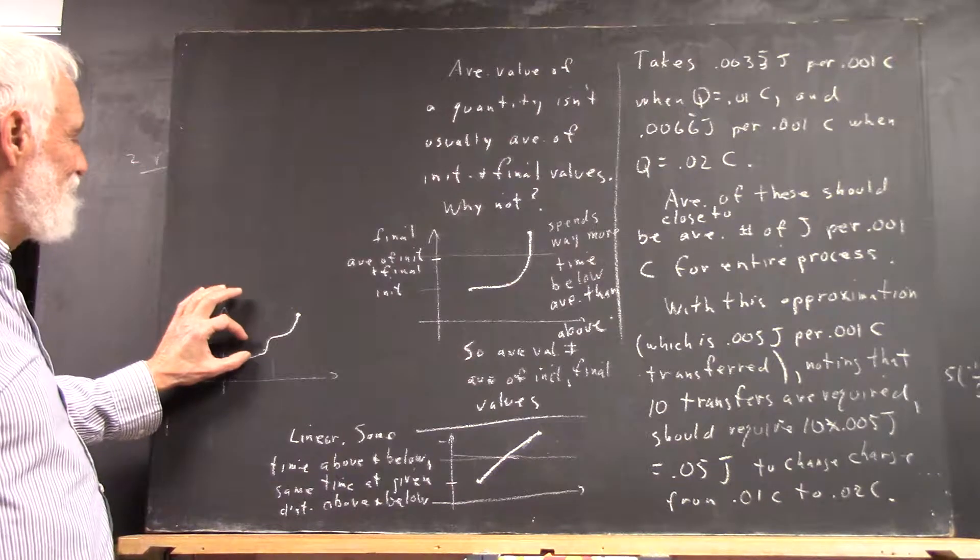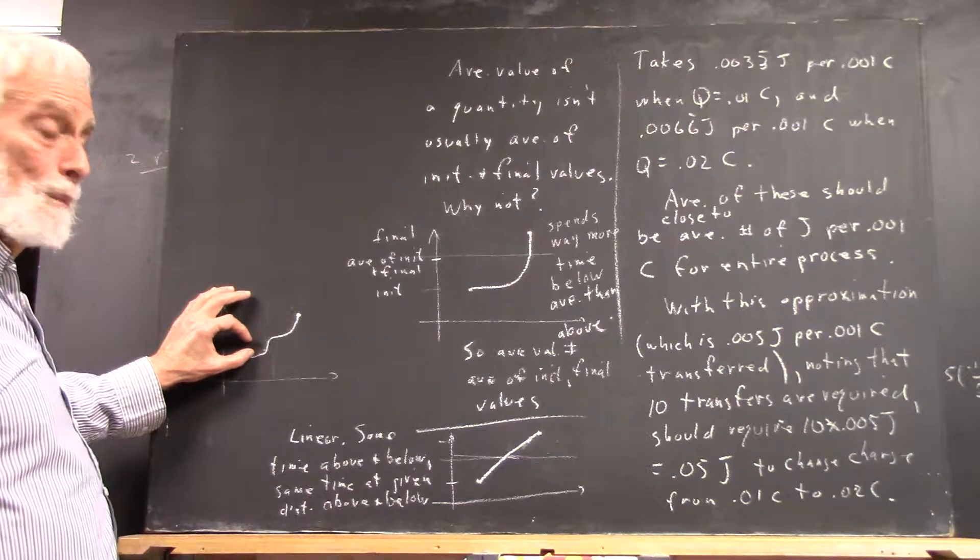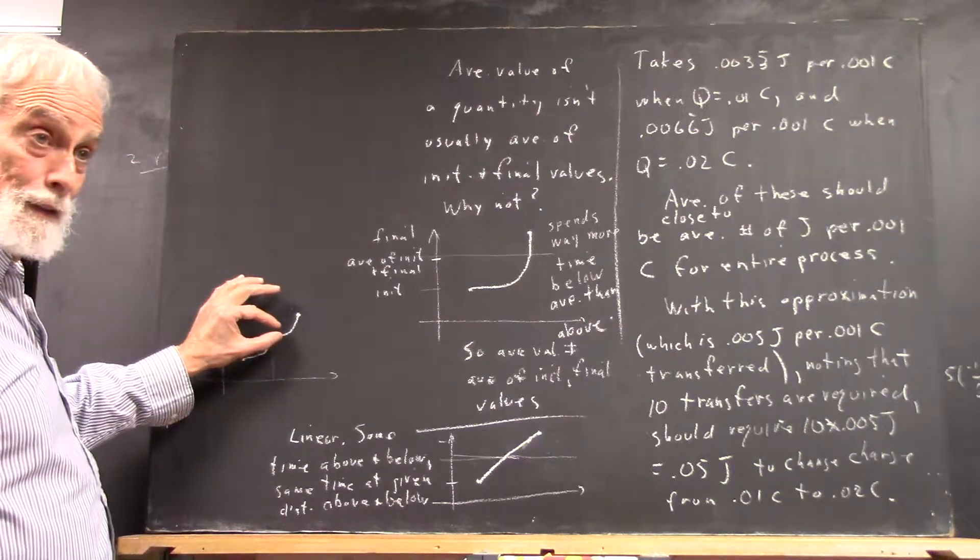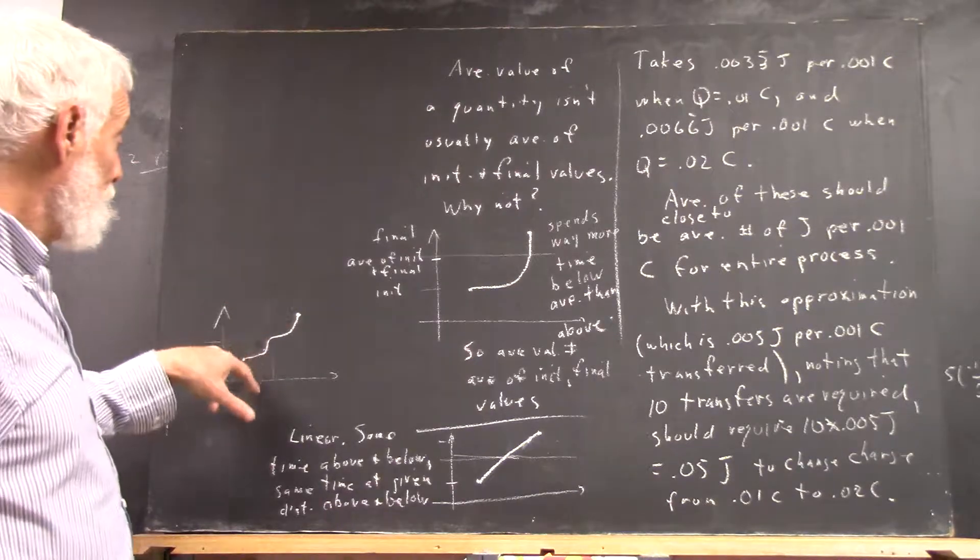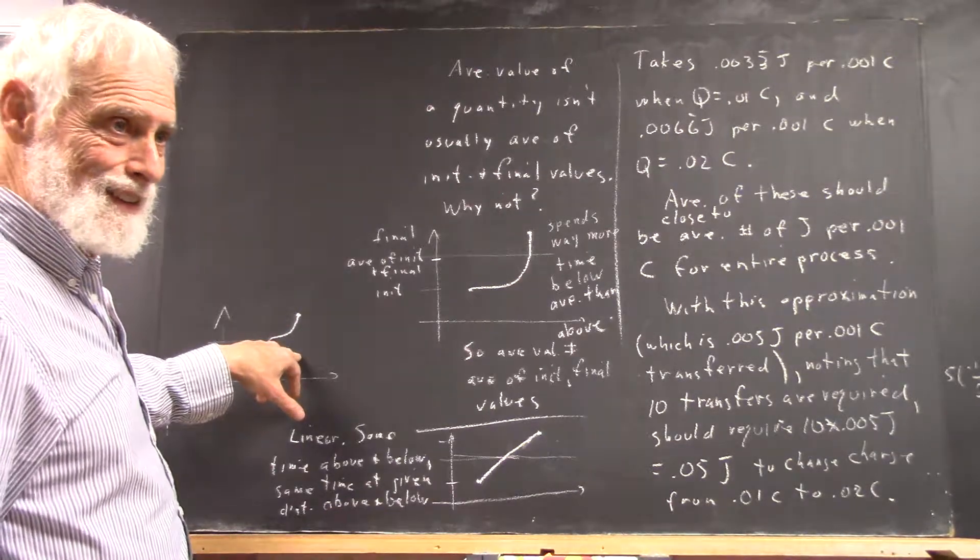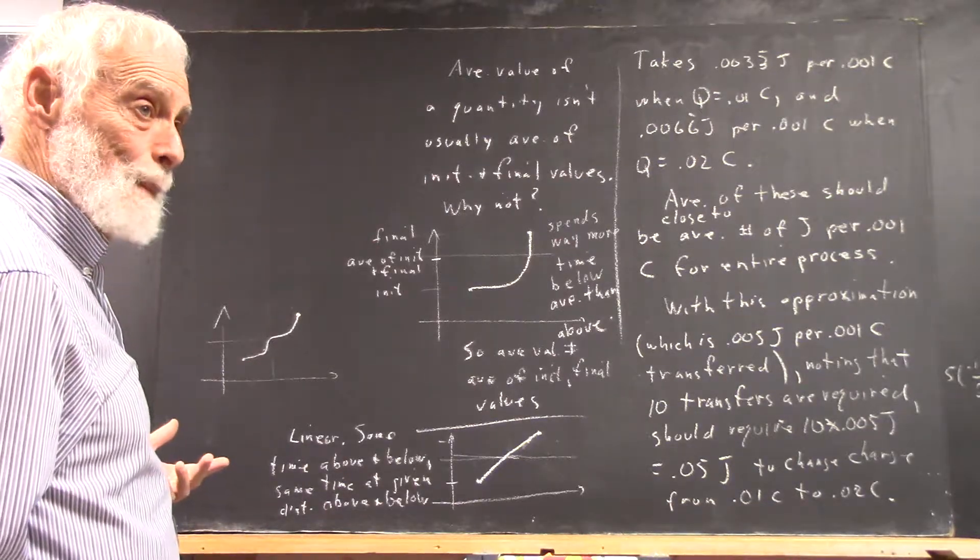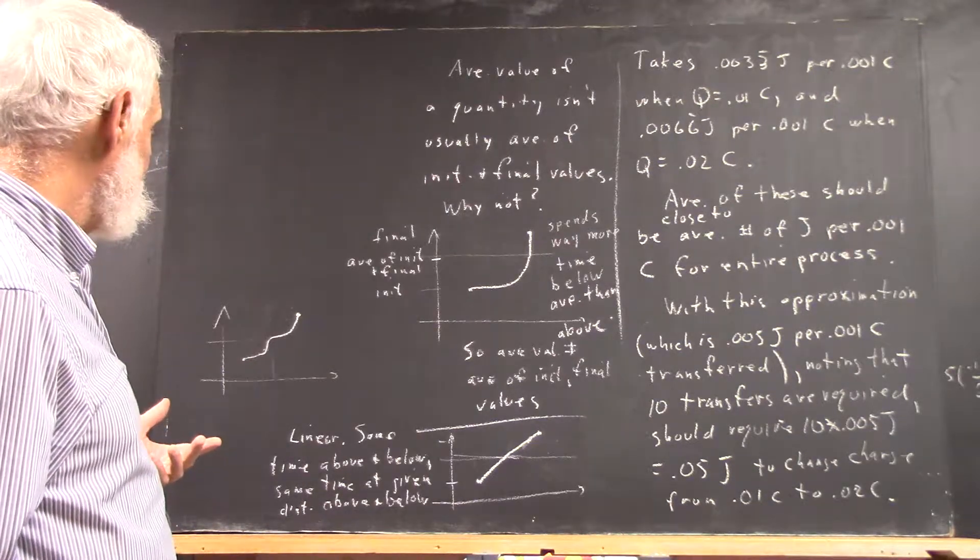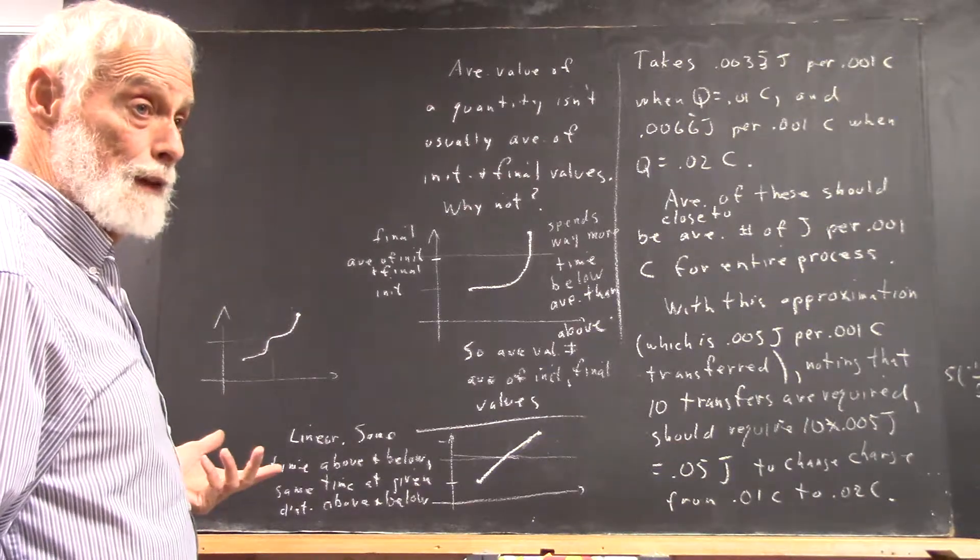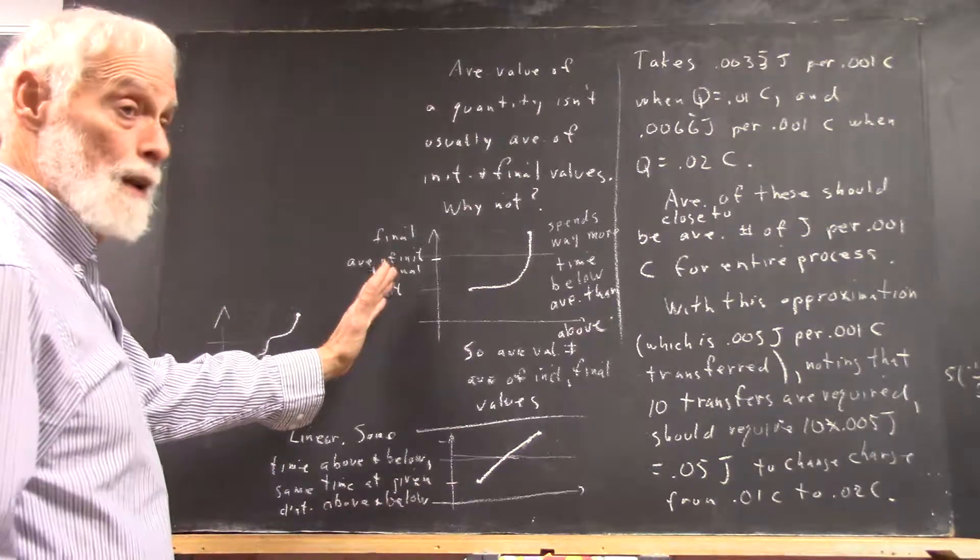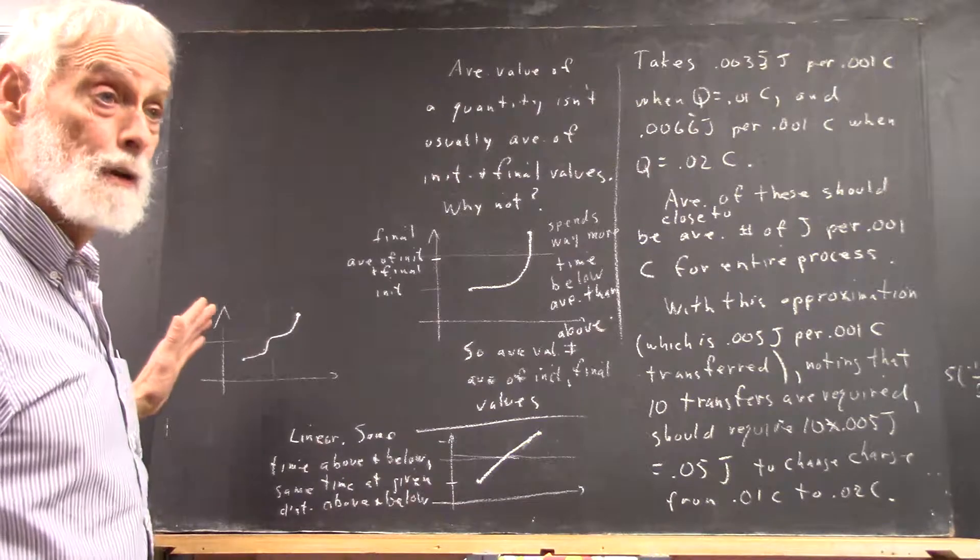Well, it's on the average about this far below, but only about this far above, right? So a graph like this could represent a situation where you have the average value is not the average of the initial final value, but it's spending equal time above the average as below, right?